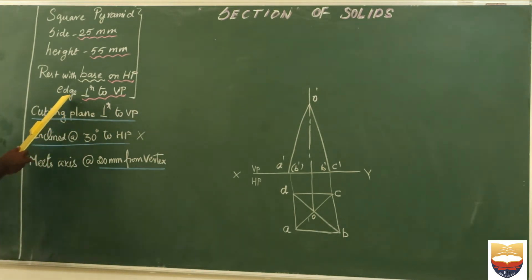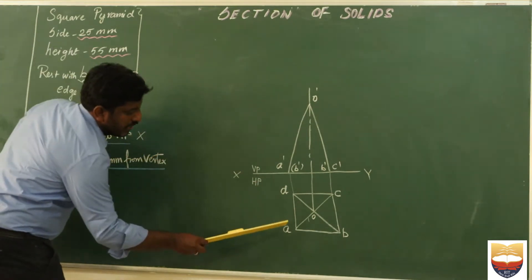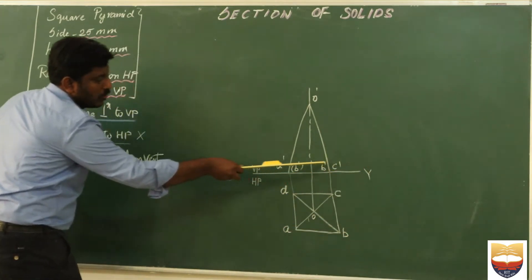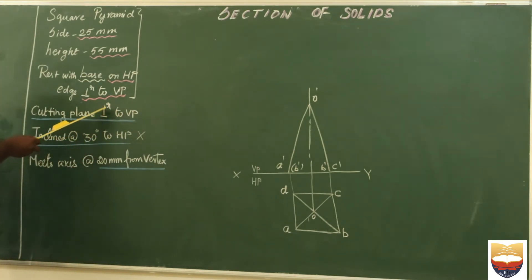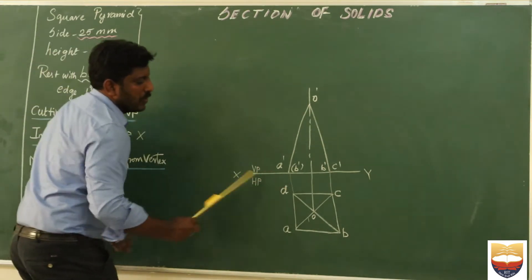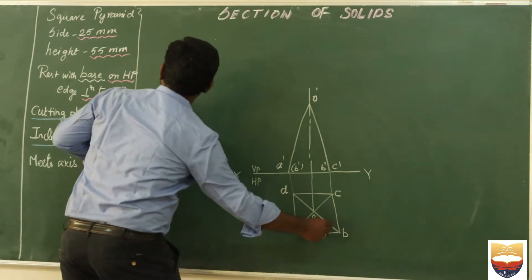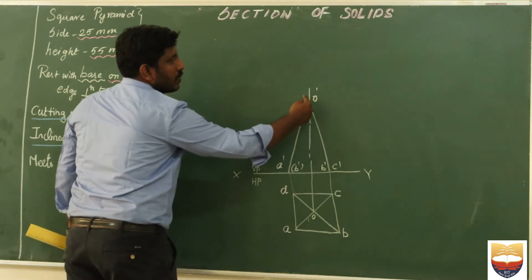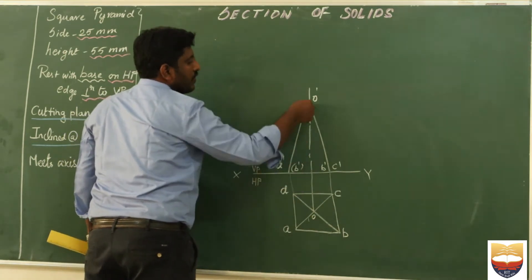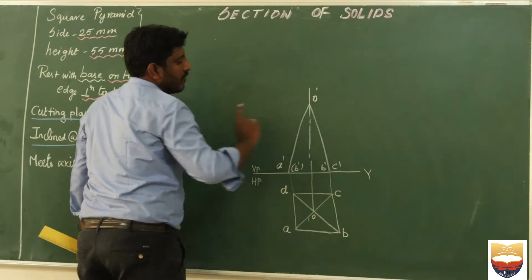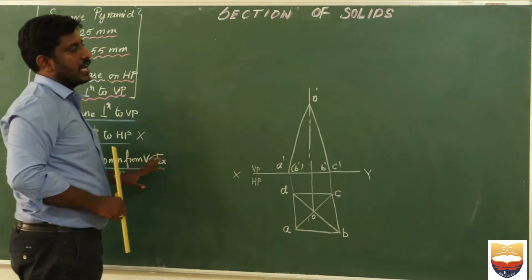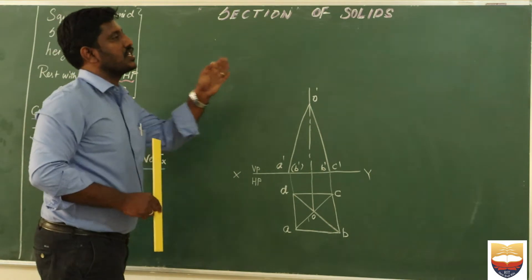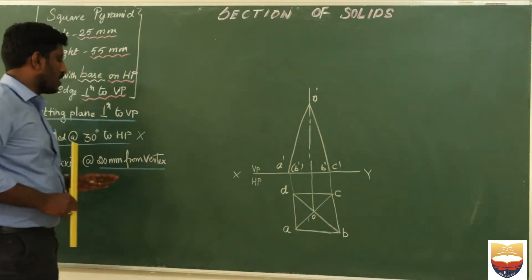Now let us try to solve this particular problem. As I told earlier, the edge is perpendicular to VP. You can see here, the edge AD and the edge BC is perpendicular to my reference line, which is perpendicular to the vertical plane. I have drawn a square of size 25mm and then I have drawn the triangle edges from the center. I have projected the center line, I have taken a height of 25mm, and then I completed my front view. This is the simple position of this particular diagram. Now comes the section of solids.